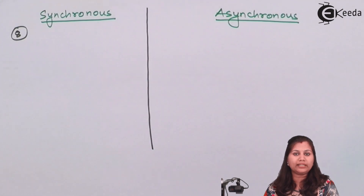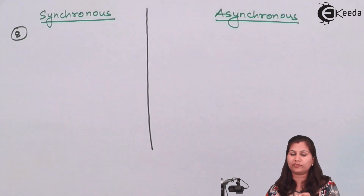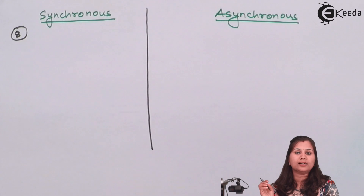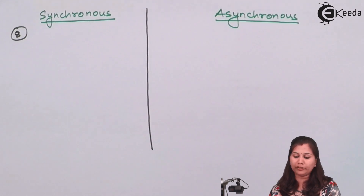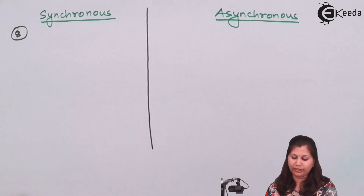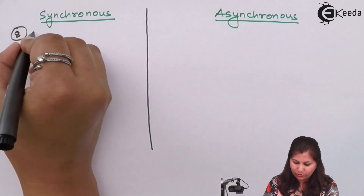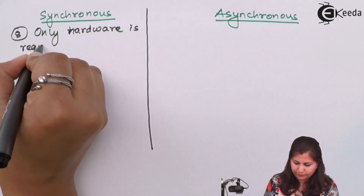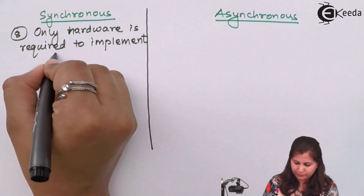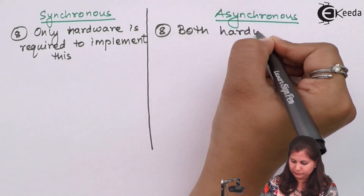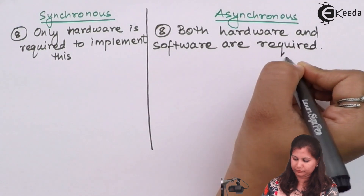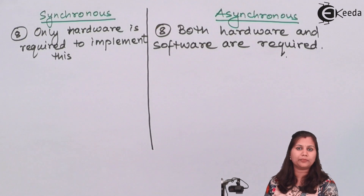In synchronous, only hardware is required — no software is needed because we only need the clock signal and the data bits. Whereas in asynchronous, both hardware and software are required, because we have to add start and stop bits and generate a parity bit. So in asynchronous, a software part is also required.